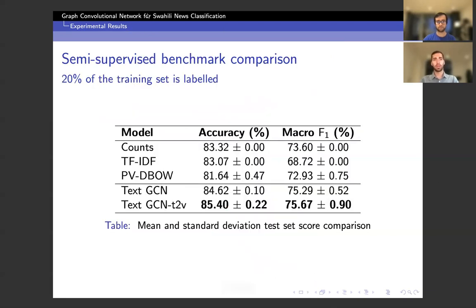Okay, now to move on to some of the experimental results. This table shows the test accuracy and macro F1 score for the document classification task with the mean and standard deviation for each model shown. And for this task, only 20% of the training labels are used to train each model, making this a semi-supervised task. And because of the class imbalance that Aleko mentioned, we consider the F1 score to be the more important metric.